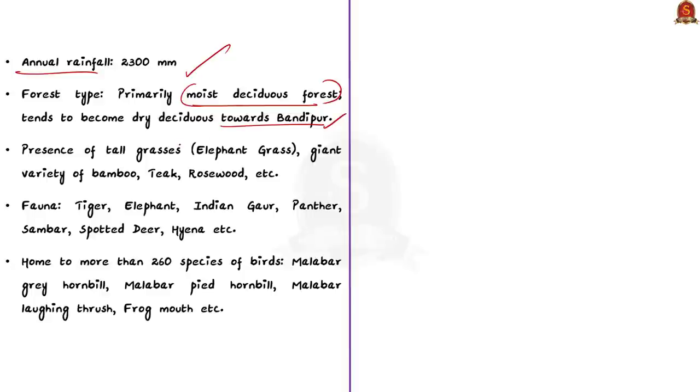Mudumalai Tiger Reserve is also known for tall grasses known as Elephant Grass. Elephant Grass is a giant variety of Bamboo. Along with the Elephant Grass, valuable timber species like Teak and Rosewood are also found in Mudumalai Tiger Reserve.